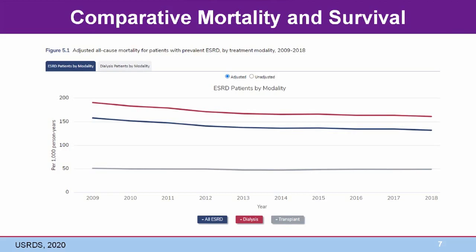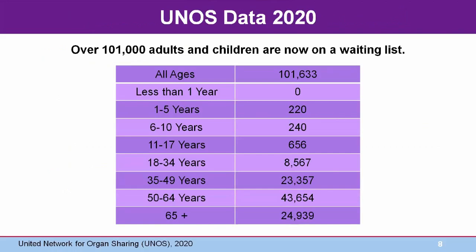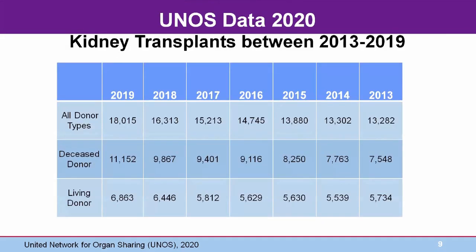So why are we not transplanting more patients? The answer is complex, but a simplified version is that there are just not enough kidney donors, living or deceased, to meet the demand. As of June 2020, there were over 100,000 people, adults and children, on the kidney transplant waiting list, waiting for a kidney from a deceased donor. Only some 18,000 patients were fortunate enough to get a kidney in 2019 — less than one in five of those waiting.